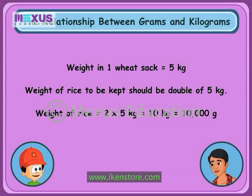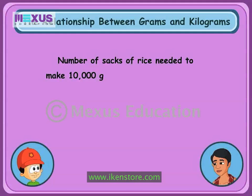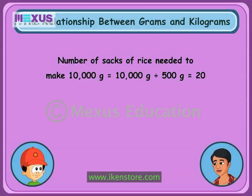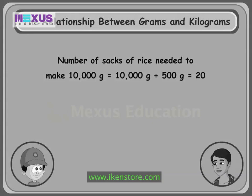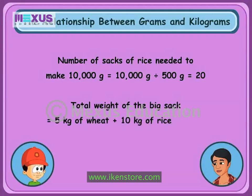So how many sacks will this make up to? We will find this out by division. The number of sacks of rice we need to make 10,000 grams will be 10,000 grams divided by the weight of one sack of rice, that is 500 grams. We get 20. So we have to keep one wheat sack of 5 kilograms along with 20 sacks of rice weighing 500 grams each into that big sack. The total weight of the big sack will be equal to 5 kilograms of wheat plus 10 kilograms of rice, that is 15 kilograms.